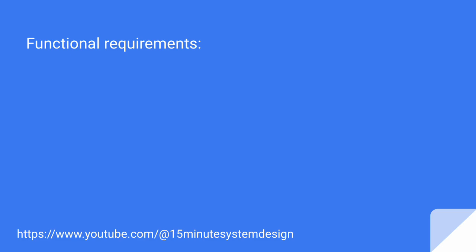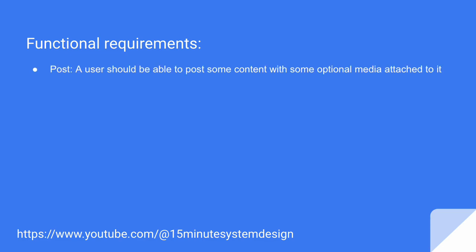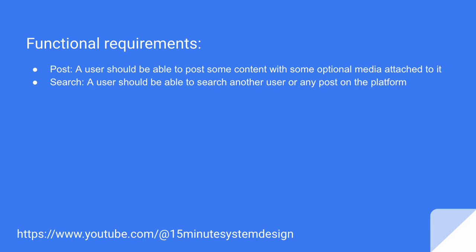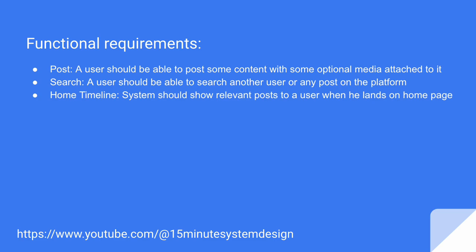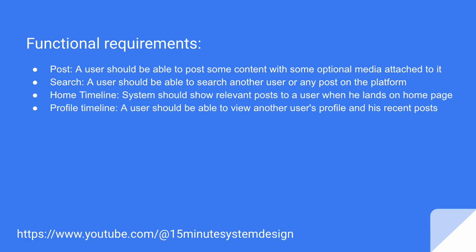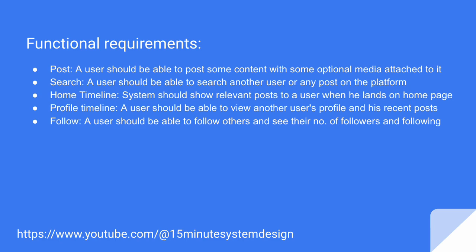Let's talk about functional requirements quickly. A user should be able to post some content with some optional media attached to it. A user should be able to search another user or any other post on the platform. The system should be able to show a relevant post to a user when he lands on the homepage. A user should be able to view another user's profile and their recent posts. A user should be able to follow other users and should be able to see their number of followers and following.